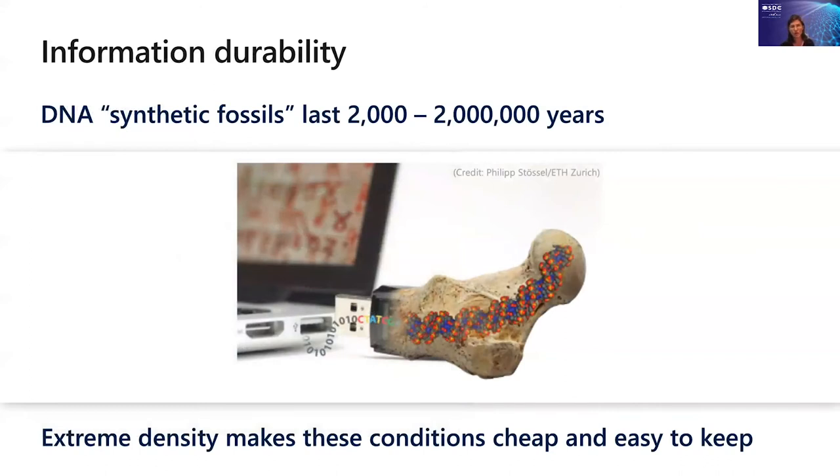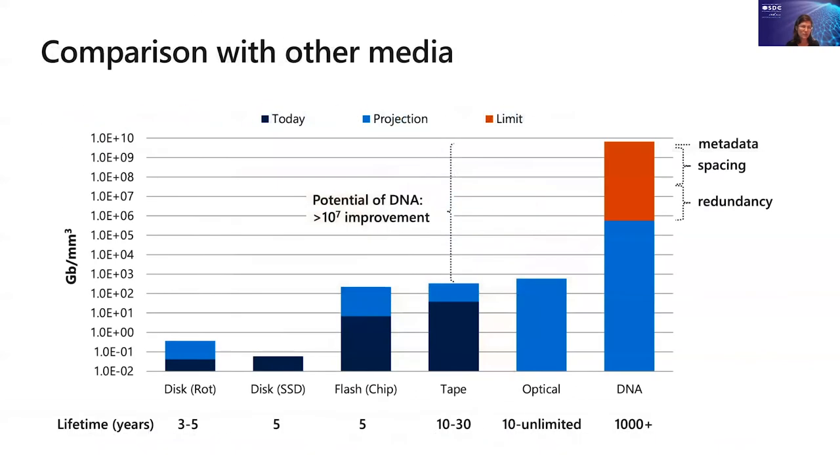The other is durability. DNA can be encapsulated. There are even demonstrations in the wild that DNA can preserve its information for thousands of years, even a million years. Obviously, that's under very special conditions. But it turns out that those conditions can be reproduced synthetically, and we can store DNA for quite a long time without having the information in it degrade. The extreme density of DNA also helps because if you need to, for example, create some conditions like cooling it, it's very dense. So it's pretty easy to cool quite a lot of material and therefore quite a lot of data.